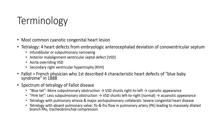Tetralogy of Fallot is the most common cyanotic congenital heart defect, resulting from embryologic anterocephalad deviation of the conal ventricular septum. The four components include: infundibular or subpulmonary narrowing, anterior malalignment ventricular septal defect (VSD), overriding aorta, and secondary right ventricular hypertrophy (RVH).